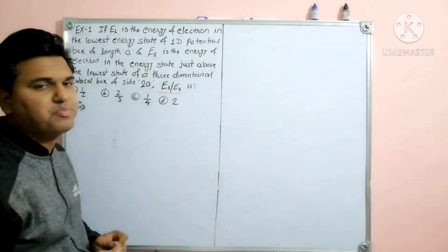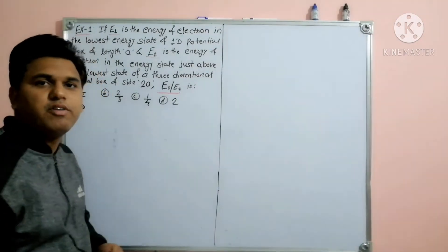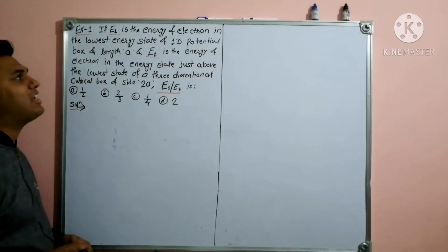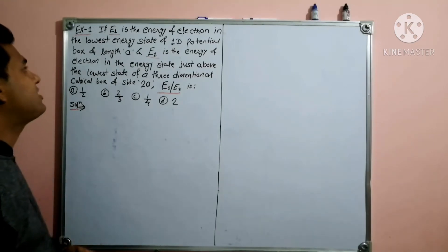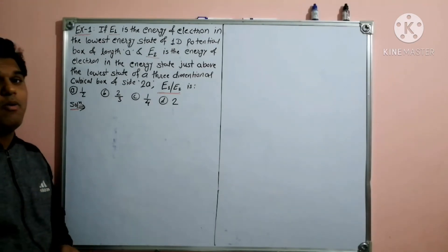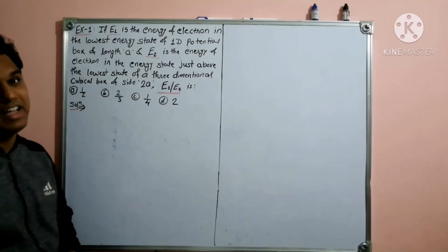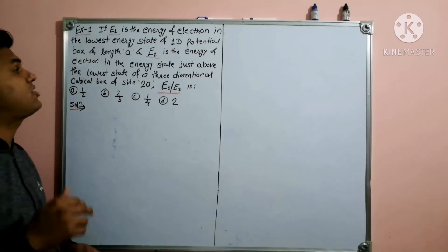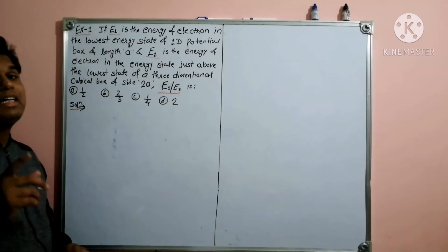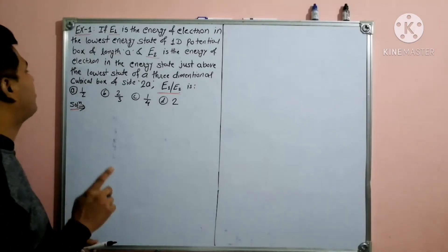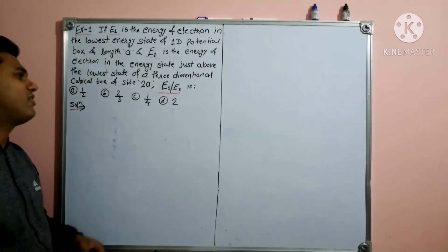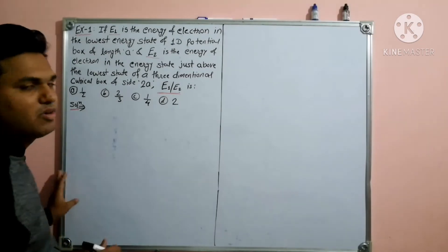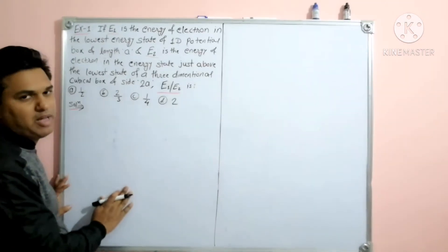This is problem number one, in which we have to find out the ratio of E1 and E2. E1 is the energy of electron in the lowest energy state of a one-dimensional potential box of length A. E2 is the energy of electron in the energy state just above the lowest state of the three-dimensional cubical box of side twice A. We have to find the ratio of E1 by E2.